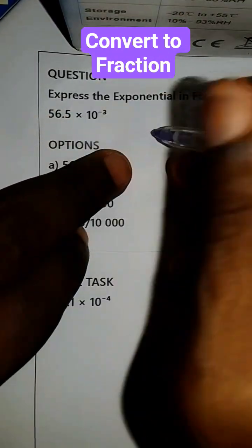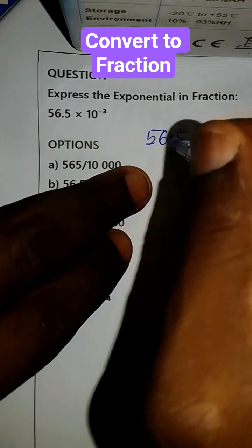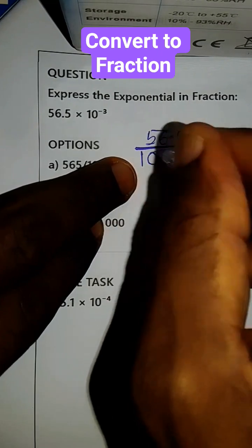Express this in fraction form. This simply means 56.5 over - the reason we're writing 'over' is because of this negative sign here. Then we want to write multiples of 10, and that is...